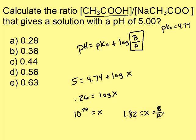But they don't want base over acid, they want acid over base. So to flip this, I just put it over 1. So 1 over 1.82 gives me 0.55. The closest answer here is D.